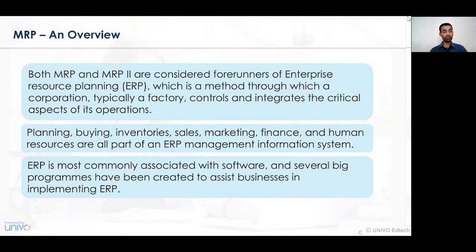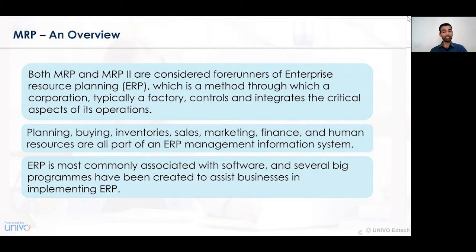Both MRP1 and MRP2 are considered forerunners and extensions of ERP — enterprise resource planning — which is a method by which a corporation controls and integrates the activity aspects of its operations. All critical activities are controlled effectively, from planning the purchasing and procurement of raw material to its disbursement or conversion into finished goods.